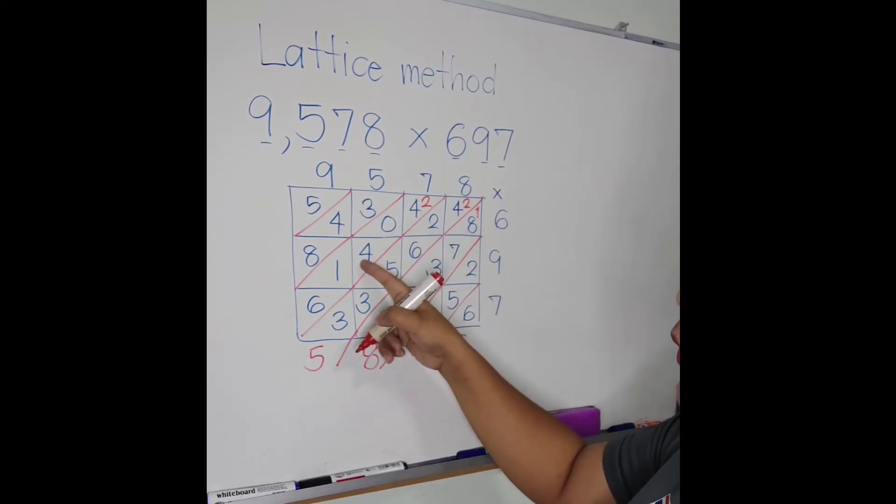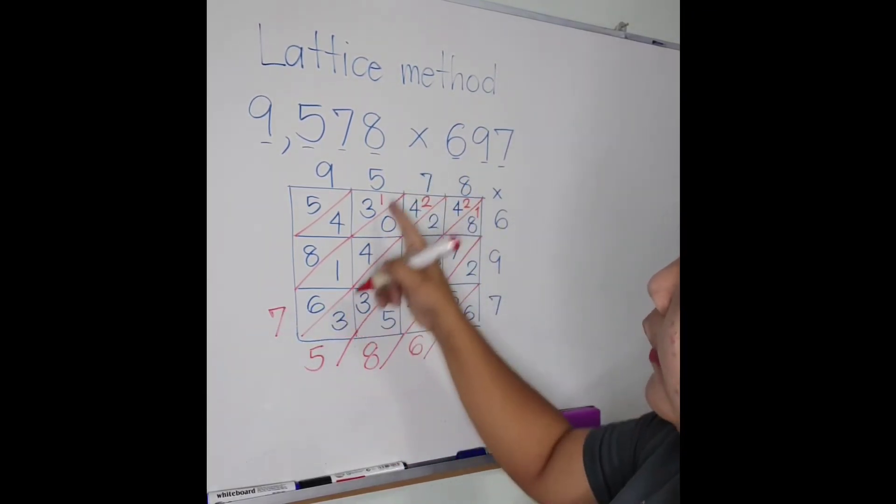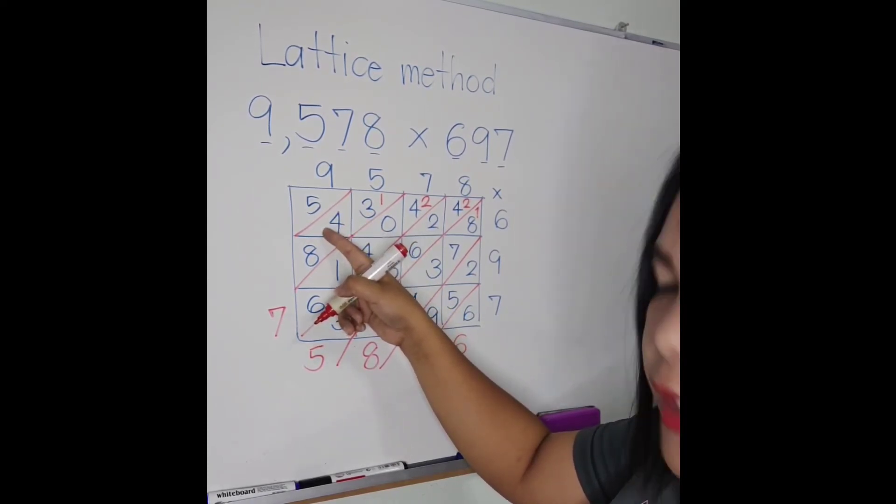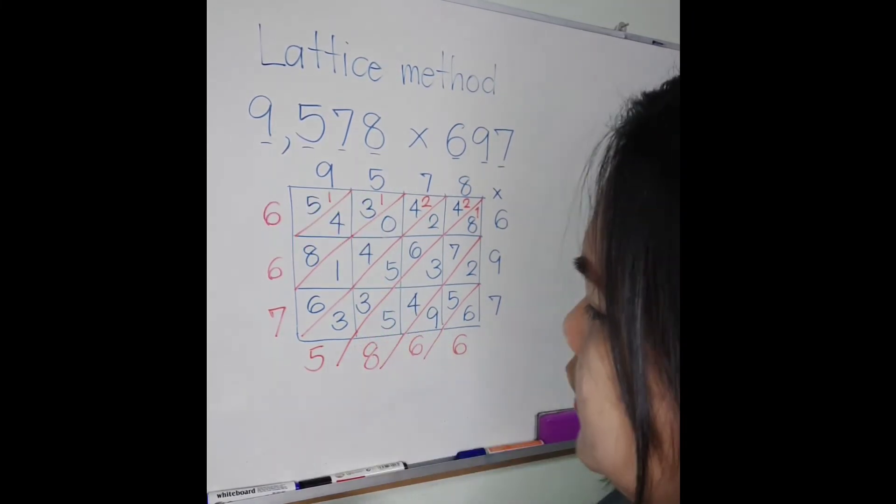2 plus 4 is 6, plus 4 is 10, 10 plus 1 is 11, plus 6 is 17, carry 1. 1 plus 3 is 4, plus 4 is 8, plus 8 is 16, carry 1 and 6.